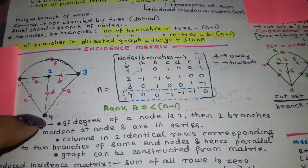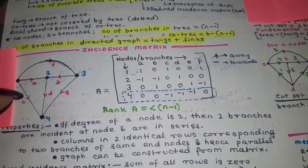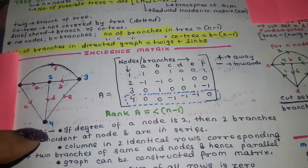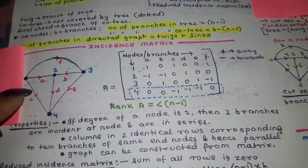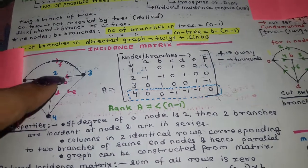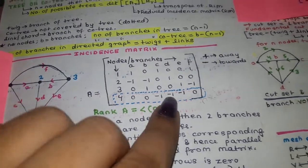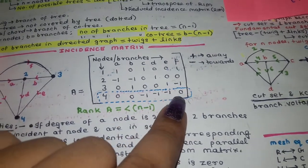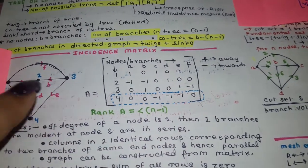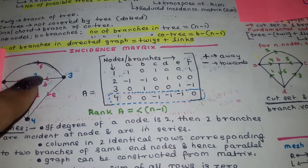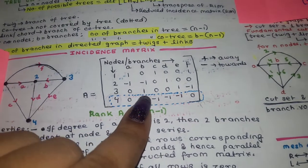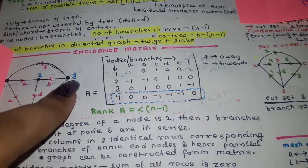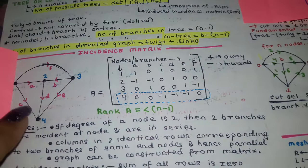Next, taking one node at a time, assign minus 1 to any branch directed towards the node, and plus 1 to any branch directed away from the node. Here, branches c, d, and e are all directed towards the node, so they are assigned minus 1. For node 3, branches b and e are moving away from the node and are assigned plus 1, while branch f is directed towards the node and is assigned minus 1.